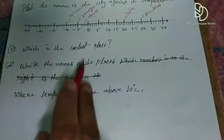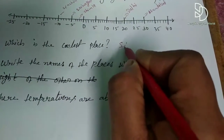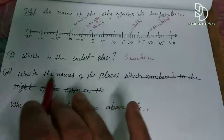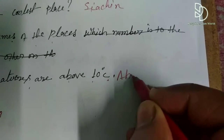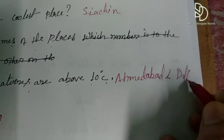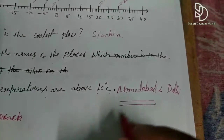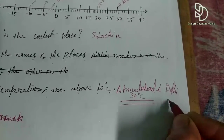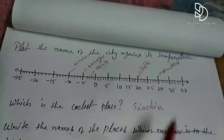Which is the coolest place? The coolest place will have the lowest temperature. Now, write the names of places where temperatures are above 10 degrees Celsius. The places above 10 degrees are Ahmedabad at 30 degrees Celsius and Delhi at 20 degrees Celsius, so we write both of these.